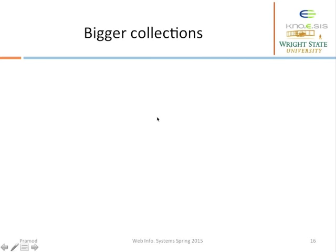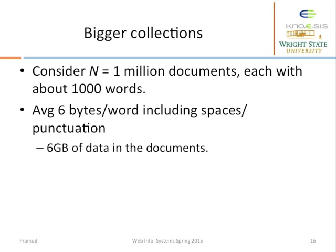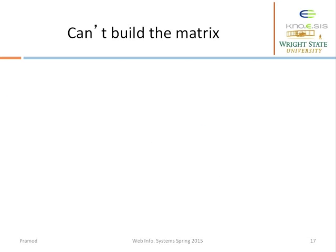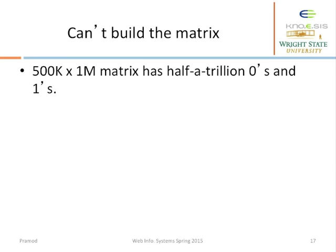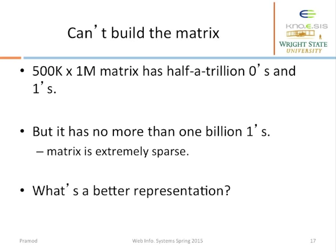Let's do a thought experiment by extending the document collection to a million documents, each containing around 1000 words. The disk space is around 6 GB for this kind of collection. Assuming around 500K distinct terms in the entire collection, the term-document incidence matrix would have around half a trillion entries of 0s and 1s. However, there are fewer than a billion ones, so this matrix is extremely sparse. So is there a better way to represent documents? It turns out yes — let's explore this new representation.